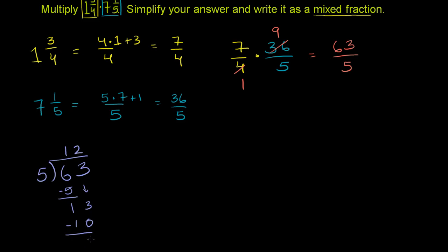And then you subtract. And you have a remainder of 3. So 63 fifths is the same thing as 12, as 12 wholes and 3 left over, or 3 fifths, or 3 fifths left over.